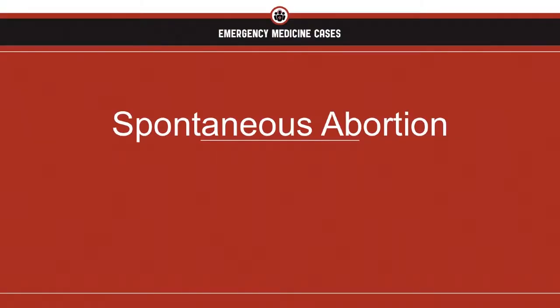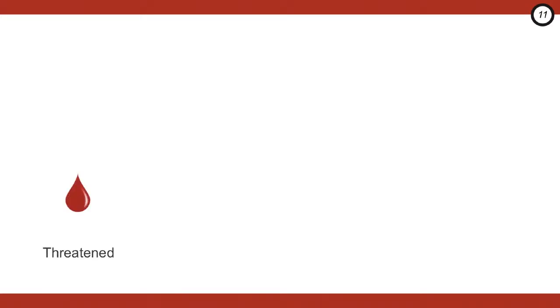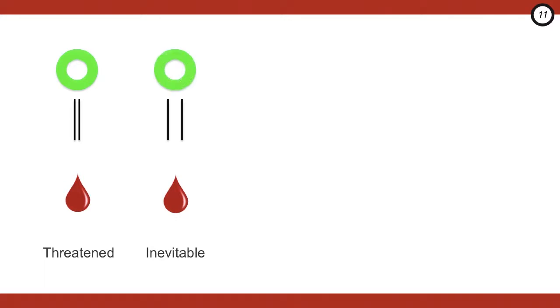The most common diagnosis you're going to make is a spontaneous abortion, and there are several different types. When differentiating them, it's important to know if the cervix is open or closed and whether there are still products of conception within the uterus. In a threatened abortion, there's vaginal bleeding, the cervix is closed, and there's no evidence of fetal demise on ultrasound — the risk of complete abortion is roughly 50%, but if there's a fetal heart rate, this decreases to about 5%. In inevitable abortion, there's bleeding with an open cervix and products of conception not yet expelled, and almost all progress to complete. In incomplete abortion, there's vaginal bleeding, the cervix is open, and products of conception are not completely expelled, based on ultrasound or exam.